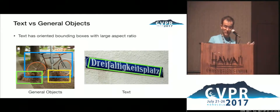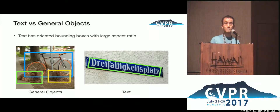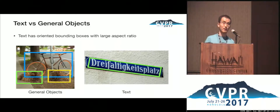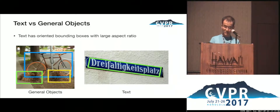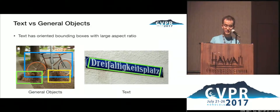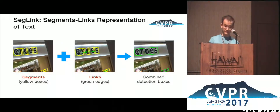As shown in these two examples, text can be very long. It can have extreme aspect ratios and text can be oriented. It should be detected by oriented bounding boxes. So these factors make text detection different from general object detection, and it is still a challenging problem.